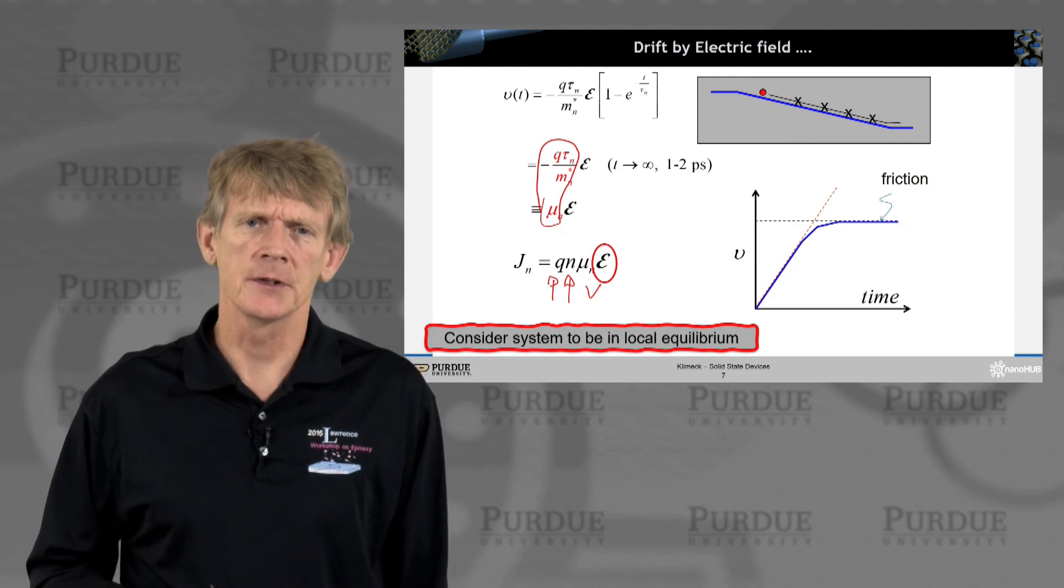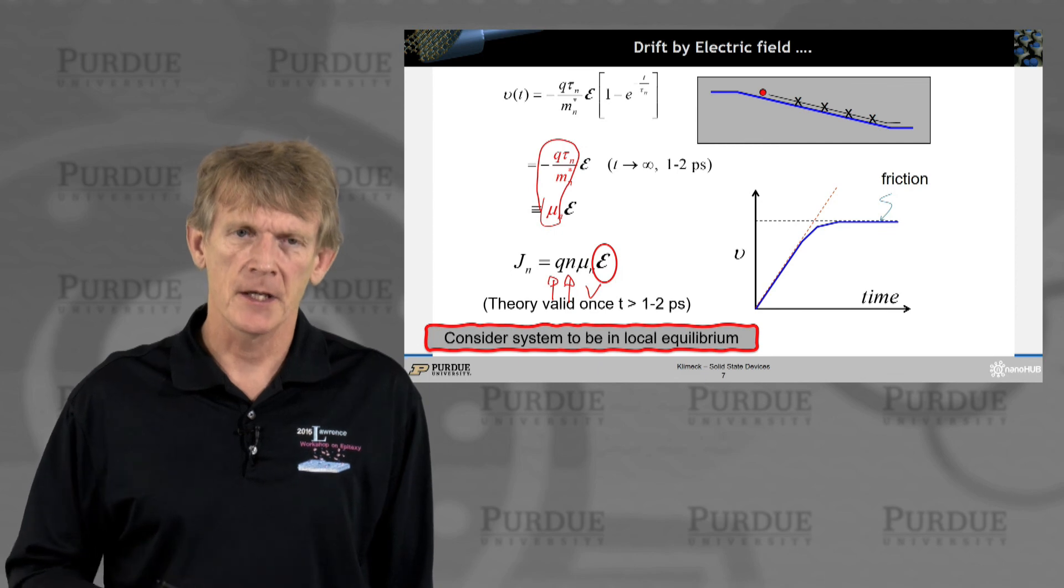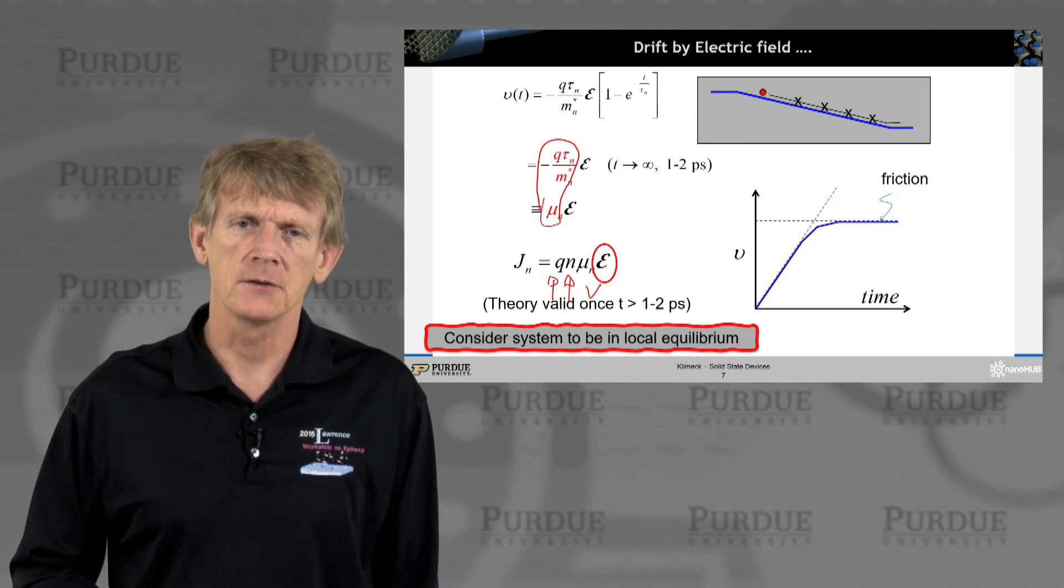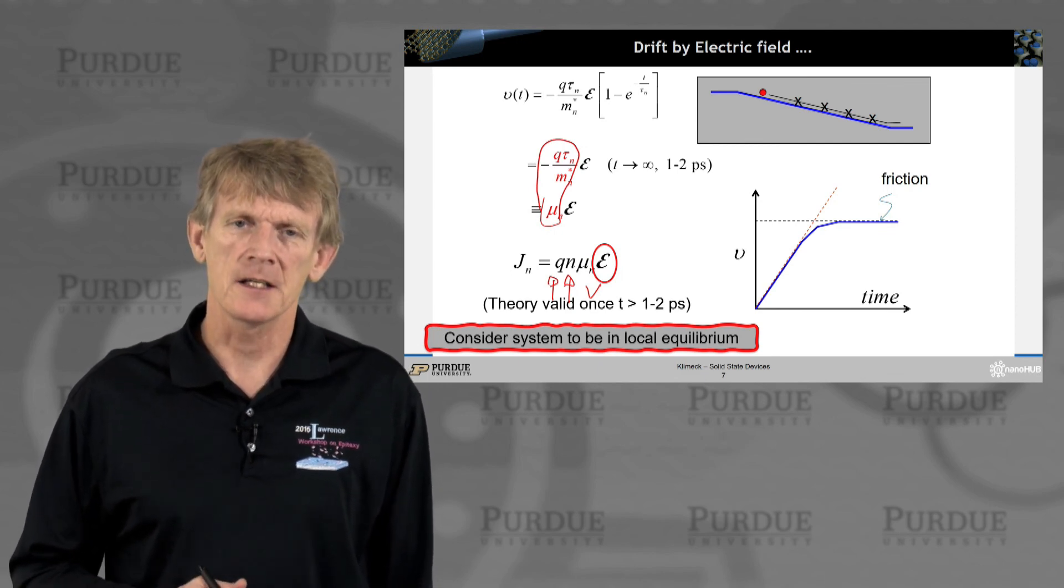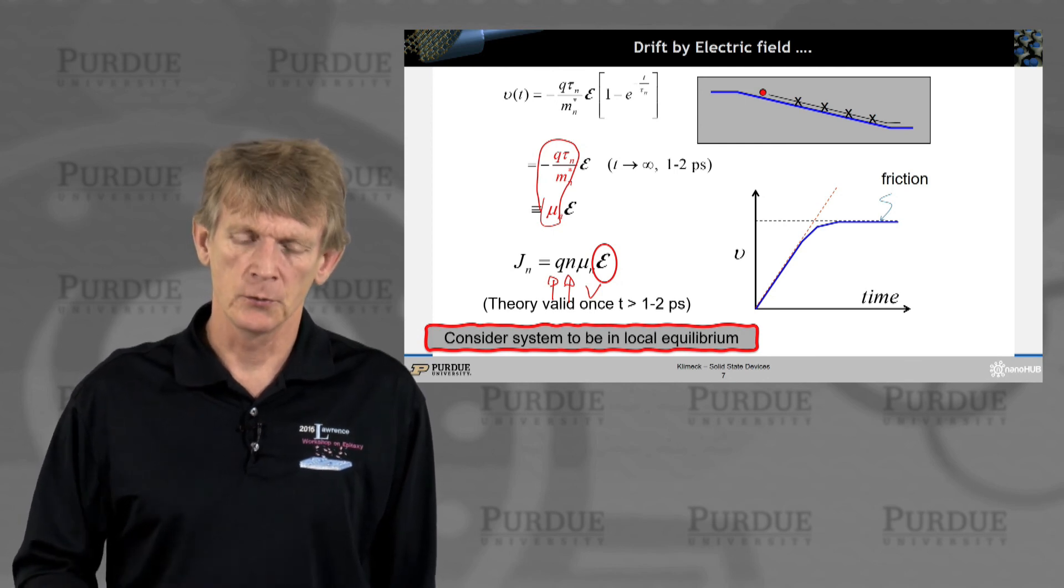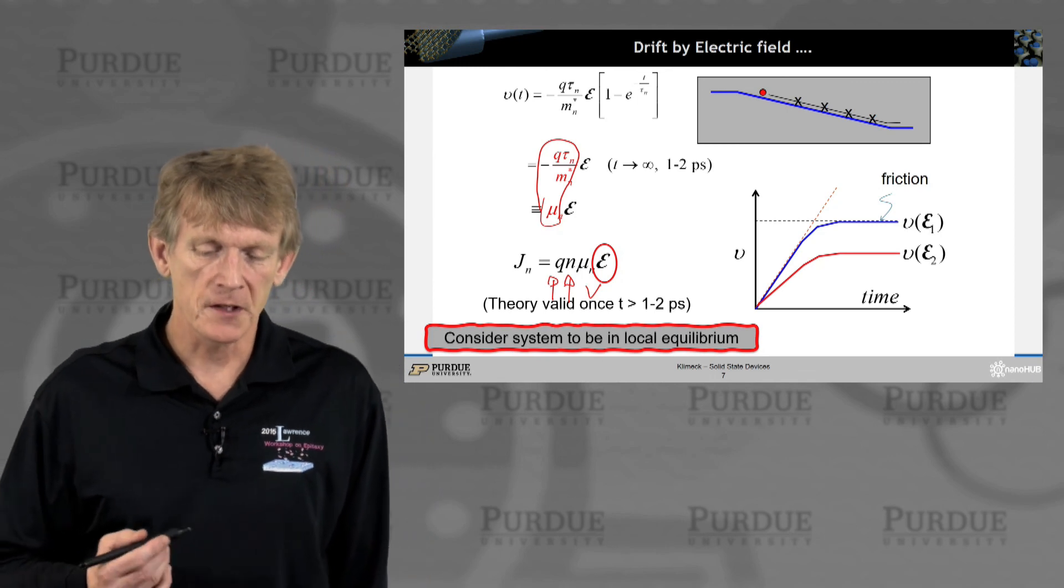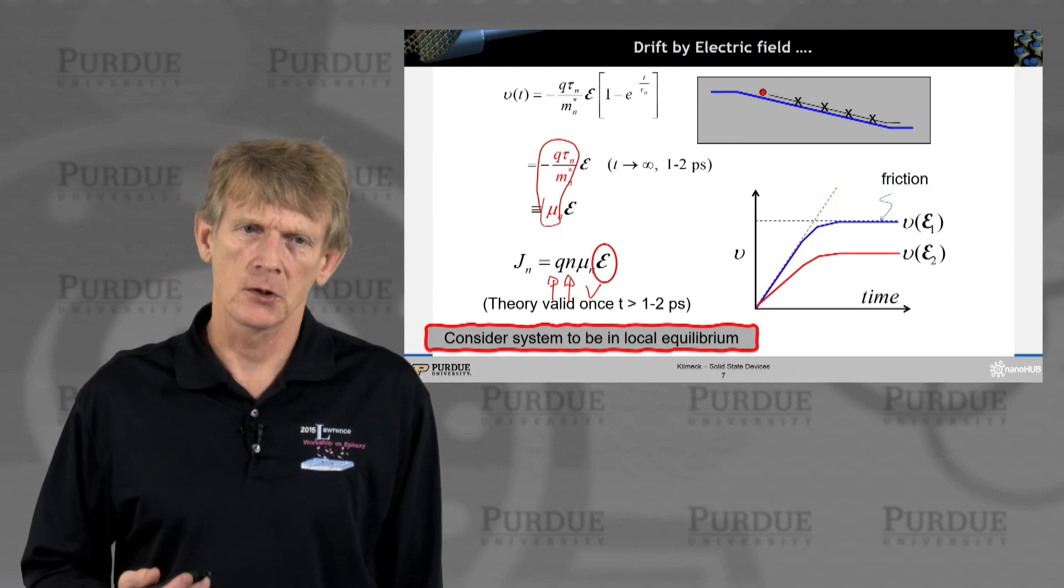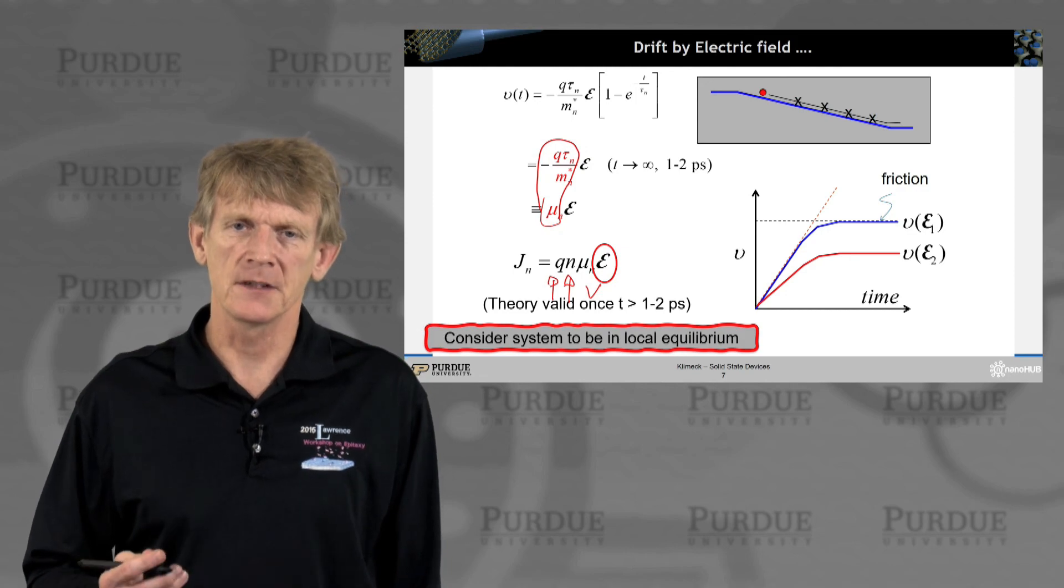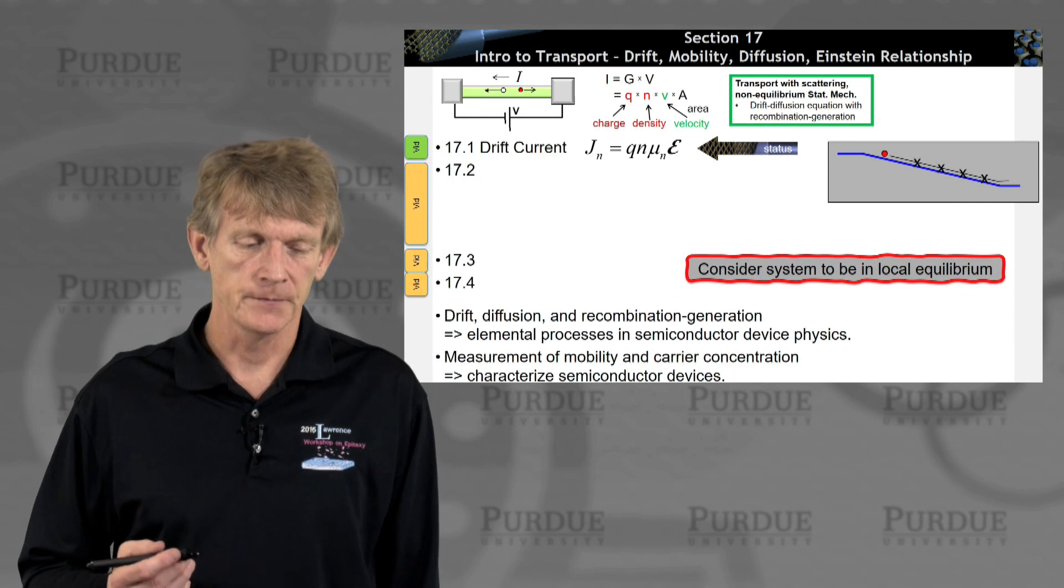Here we go. This is the drift equation. And we'll be solving this quite a bit in this course. And as I mentioned, this theory is valid once you've reached the relaxation time of one to two picoseconds. So for different configured systems, for different taus, you will have different terminal velocities.